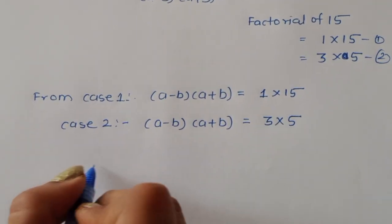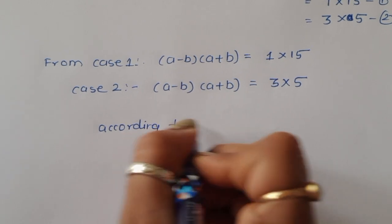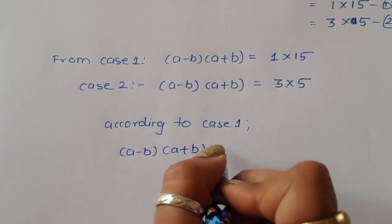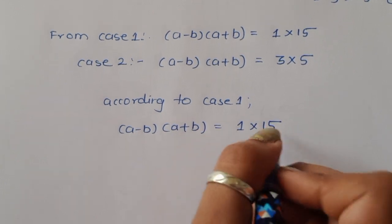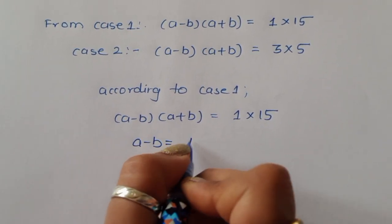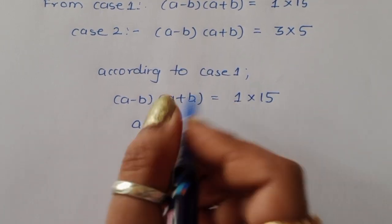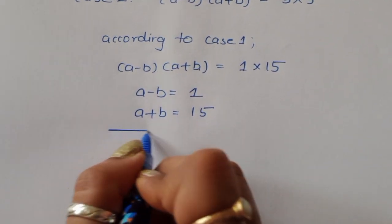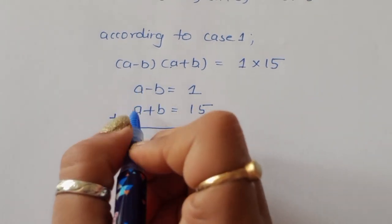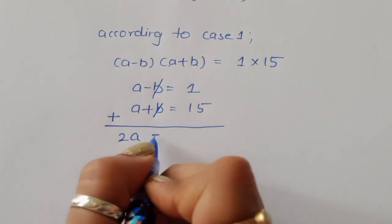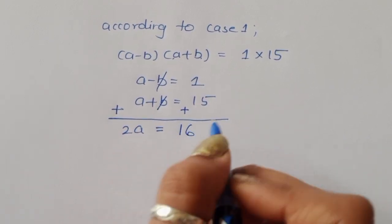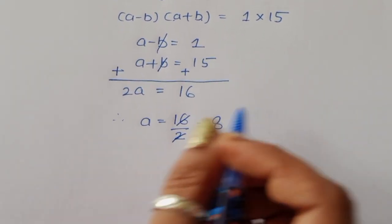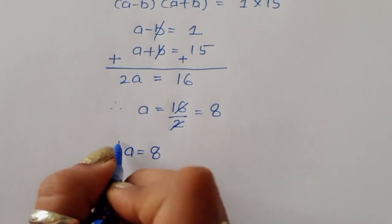From case 1, we have A minus B is equal to 1 and A plus B is equal to 15. Now we are adding these two equations. A plus A gives 2A, and minus B plus B cancels, equal to 15 plus 1, which is 16. Therefore, A is equal to 16 divided by 2, which is equal to 8.